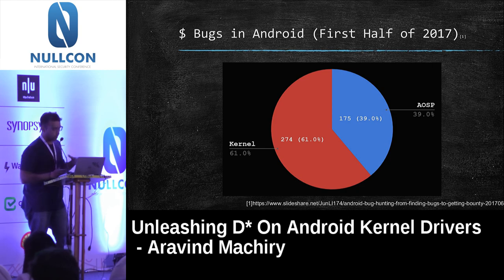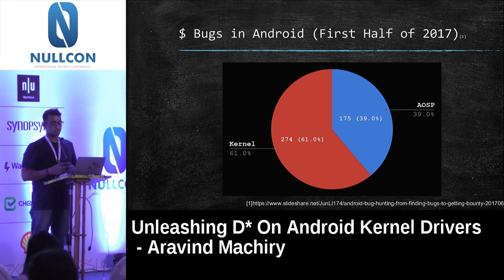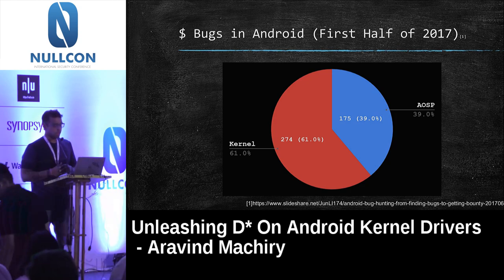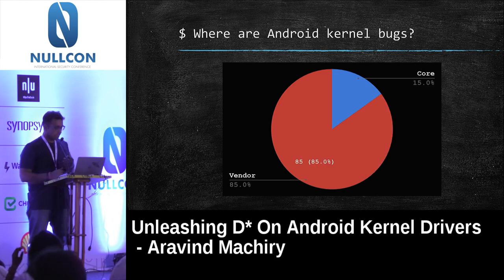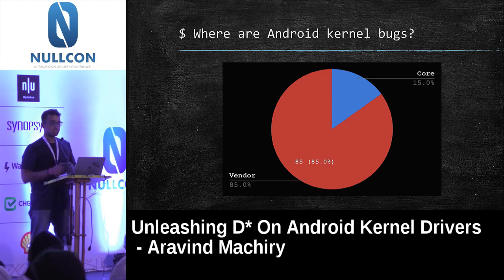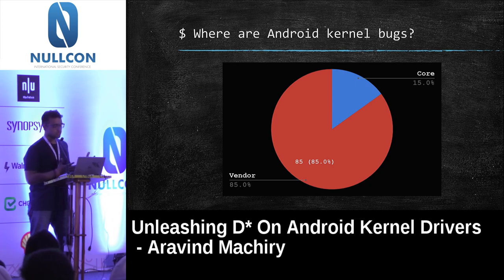If we go a bit deeper and see where exactly these bugs are, 39% are in AOSP — the Java layer of Android — and 61% are in the kernel, which is the low-level C code. Drilling further, 15% of kernel bugs are in core components like networking stack and memory management, while 85% are in vendor code — basically driver code.